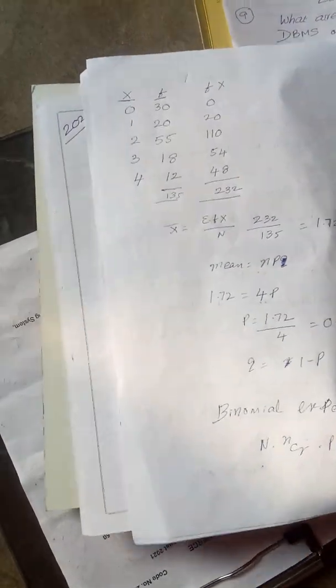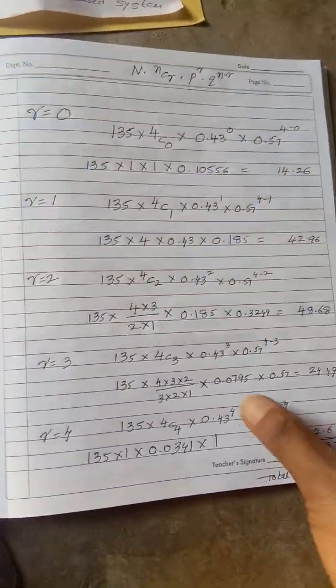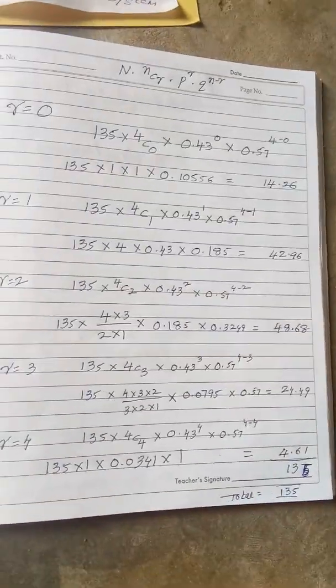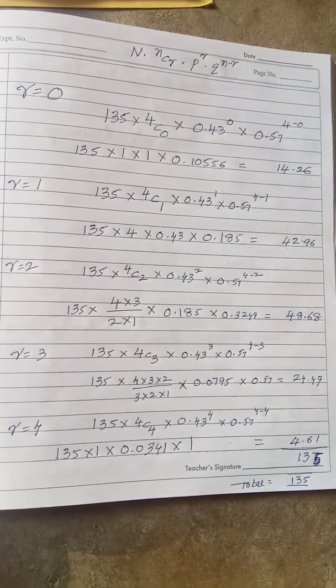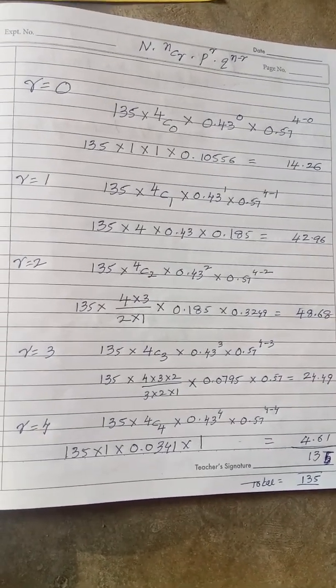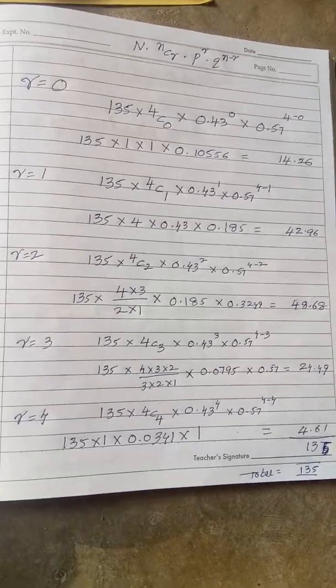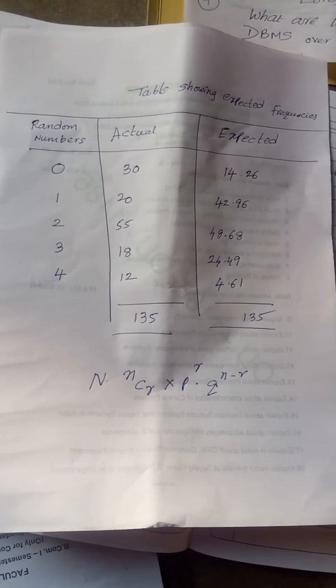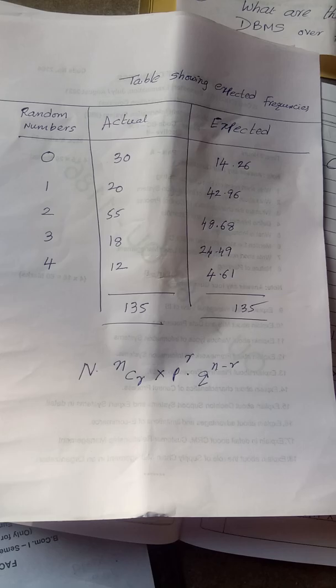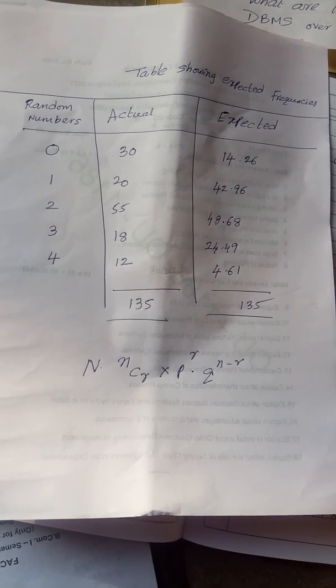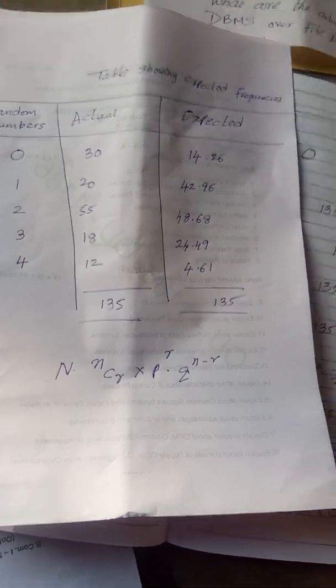Here like this, NCR - if you have any doubt you can ask me. Then we need to make a table showing the actual frequencies and expected frequencies.